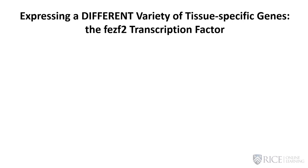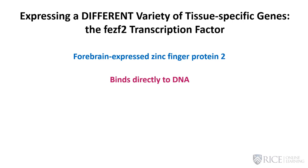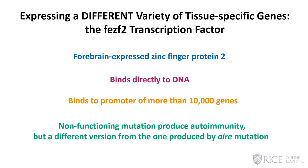Our second transcription factor is FezF2—Forebrain-Expressed Zinc Finger Protein 2. It does have zinc fingers and seems to bind fairly directly to the promoter regions of more than 10,000 genes, directly promoting the expression of more than 10,000 tissue-specific genes. A non-functioning homozygous mutation also produces severe autoimmunity, but a very different disease from the one caused by the AIR mutation. We need both transcription factors together to upregulate all the proteins needed to protect against self-recognition in thymocytes before they leave the thymus.